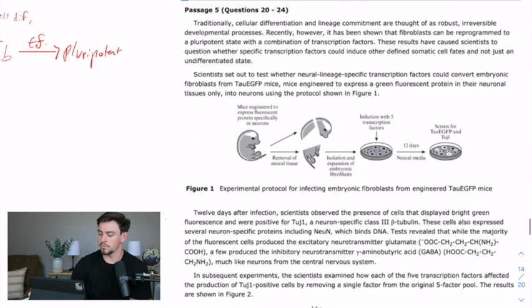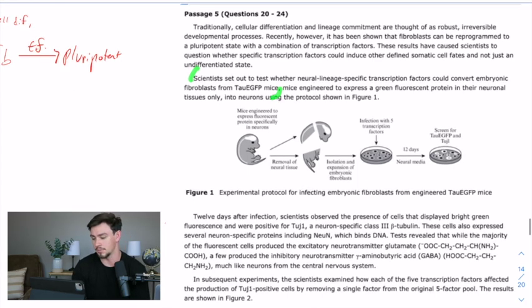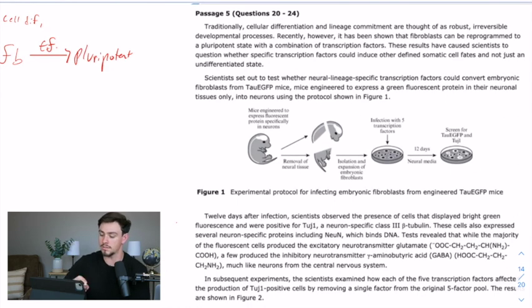The scientists set out to test whether neural lineage-specific transcription factors could convert embryonic fibroblasts from tau EGFP mice. You see how this is just a big long run-on sentence. You're gonna have to break it up. And so the commas are excellent breaks. So make sure once you get to a comma, if you're in the center of a giant sentence like this, take the time to say, do I actually understand what the heck we're talking about already? And so here they're really just taking transcription factors from neurons and converting this fibroblasts. Converting them into what? Into neurons. Okay. So that kind of skipped the inside part where they're just describing what green fluorescent protein is. Okay. So can we take fibroblasts from tau EGFP mice, and can we use these transcription factors that are neuron-specific, and can we turn them into a neuron? That's a huge relationship.